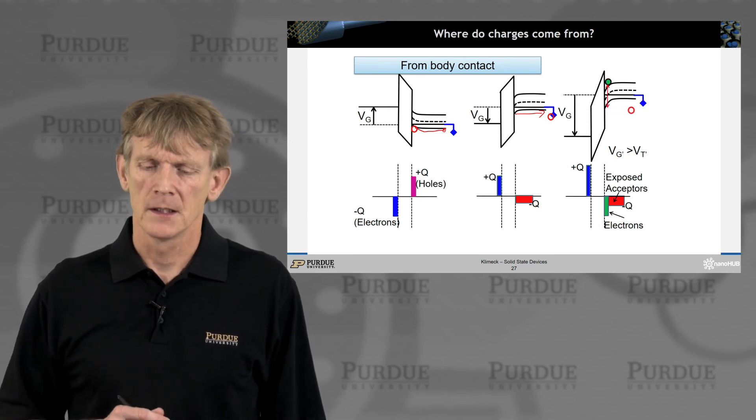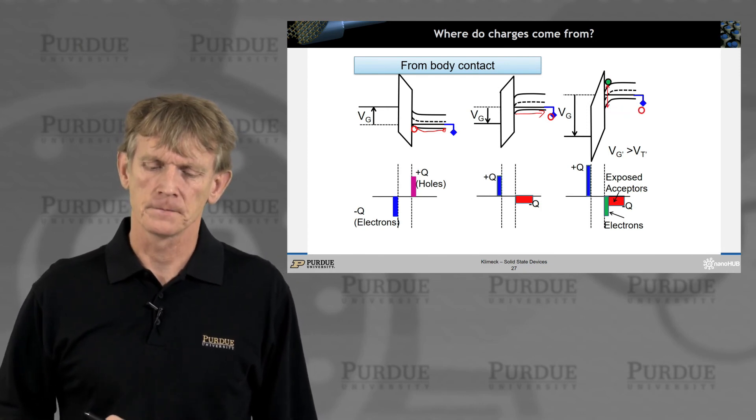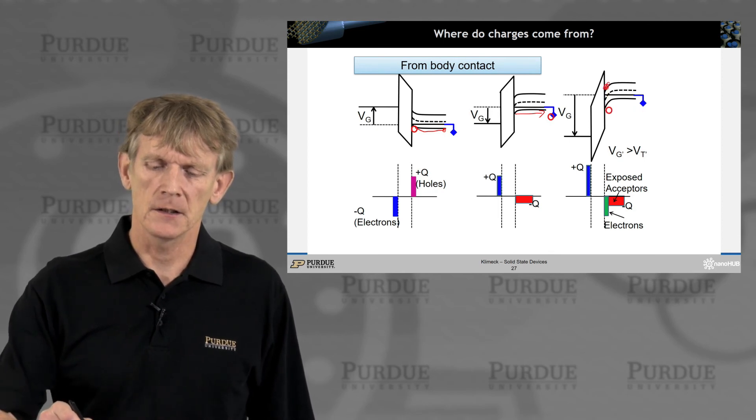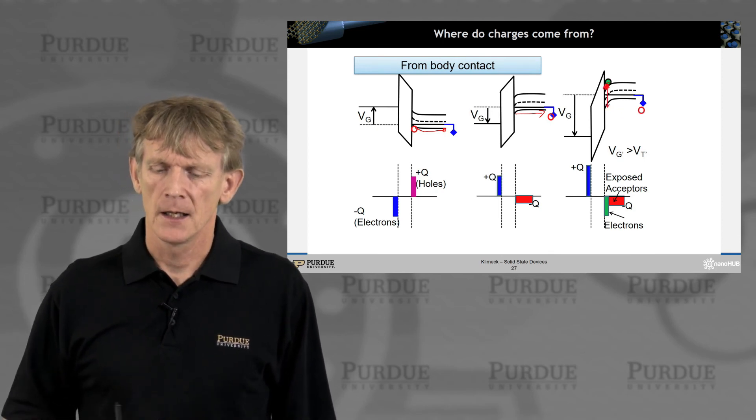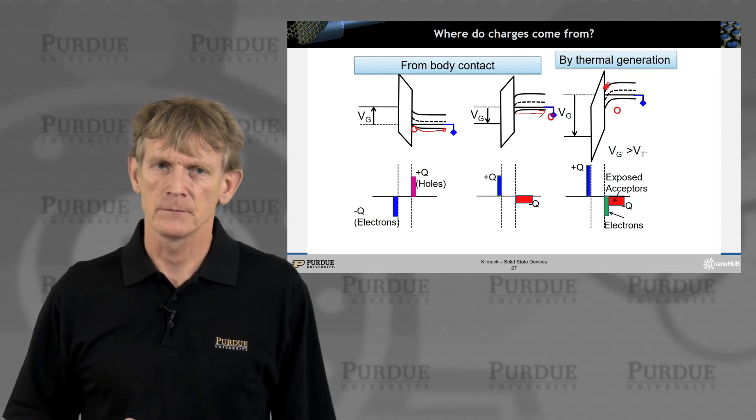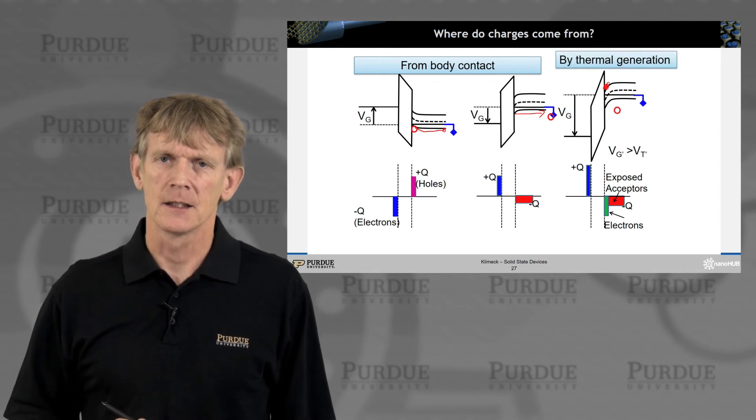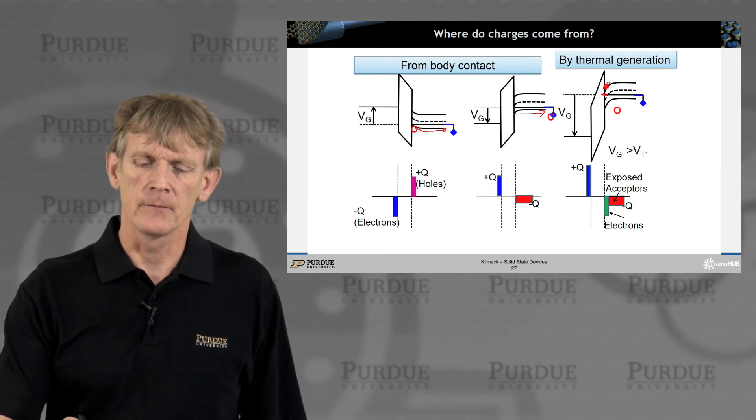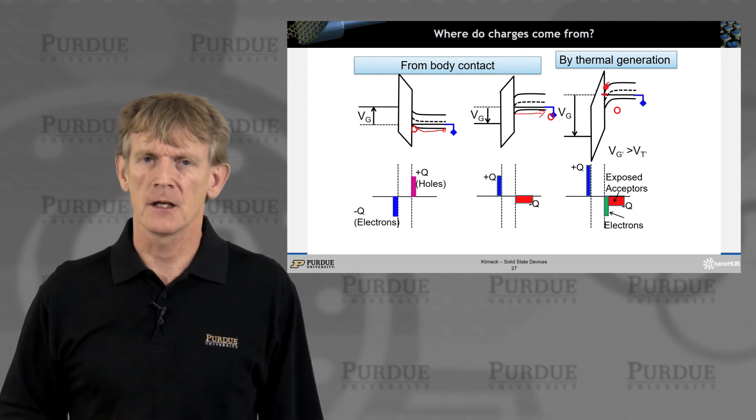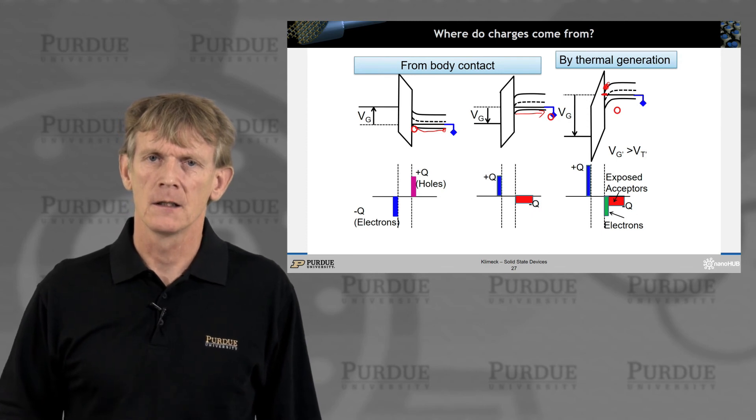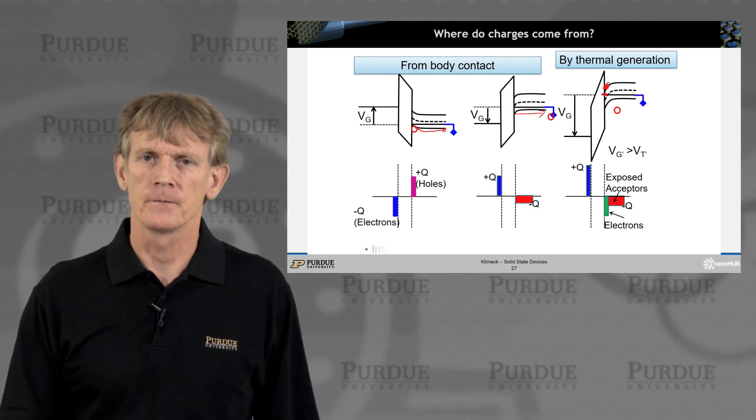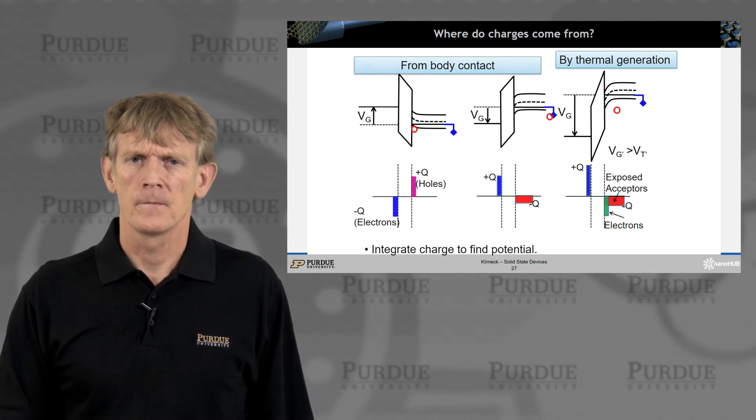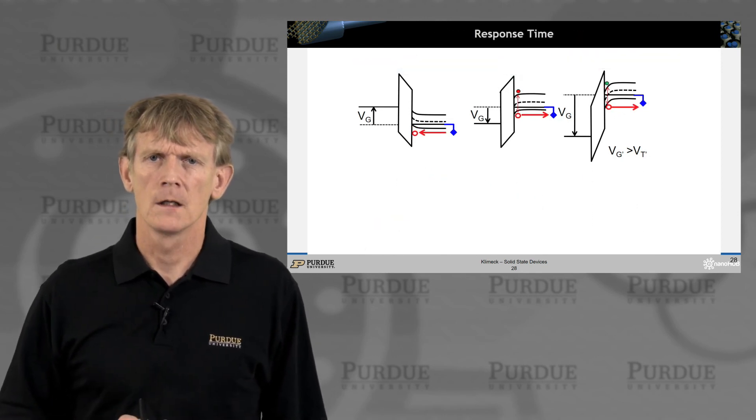Now, if you have inversion, then you somehow need to get carriers in here. And that happens through generation, by thermal generation. The Fermi level is closer to the conduction band, and you have Shockley Reed Hall generation of carriers.